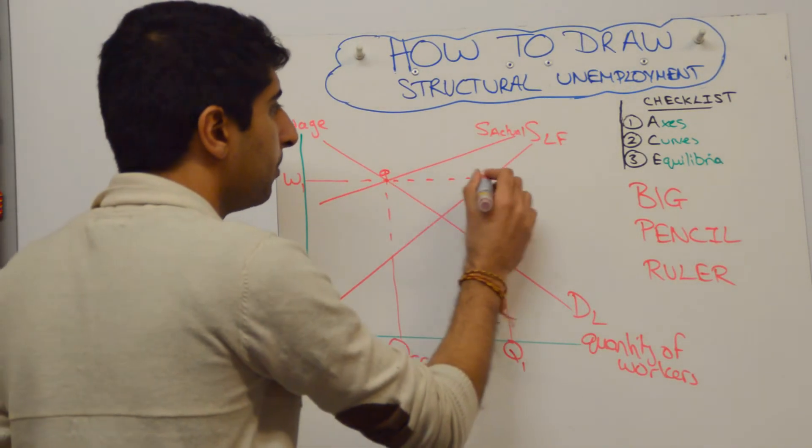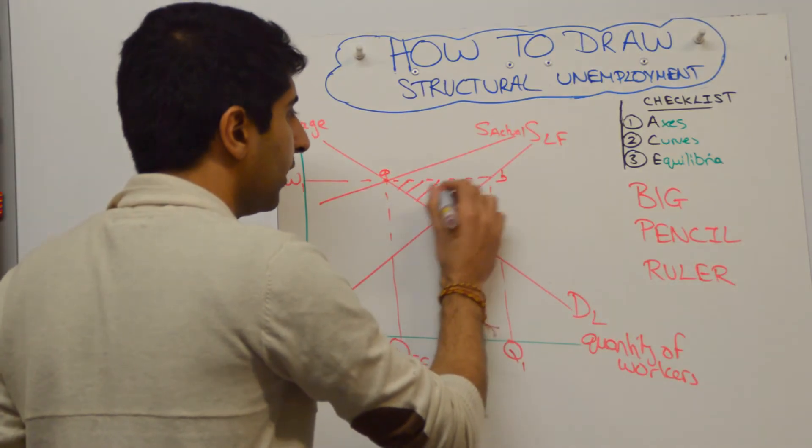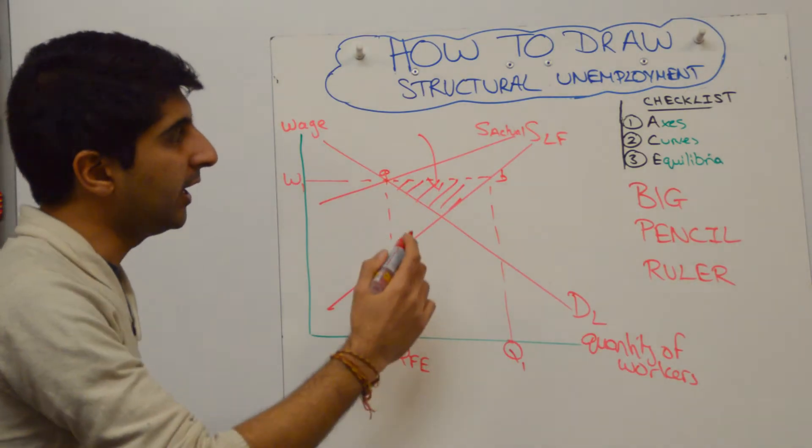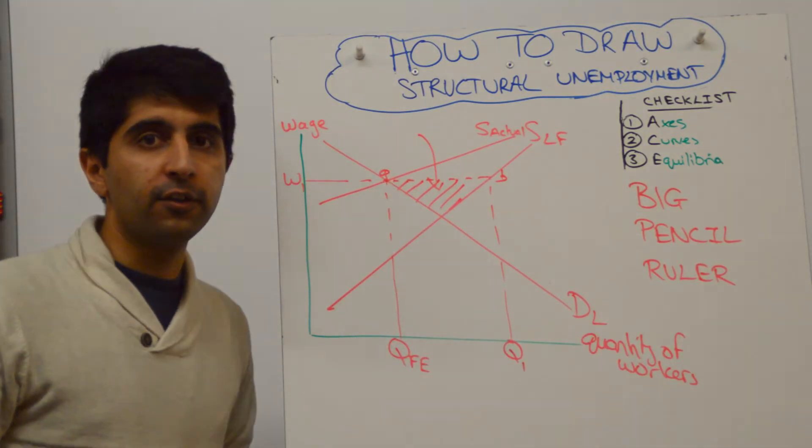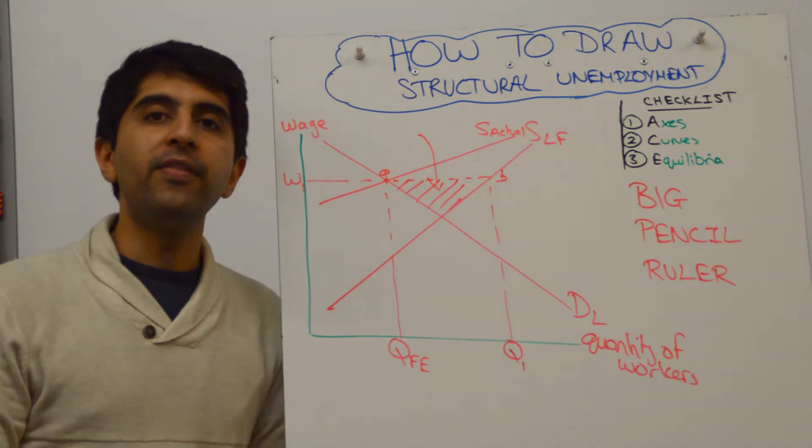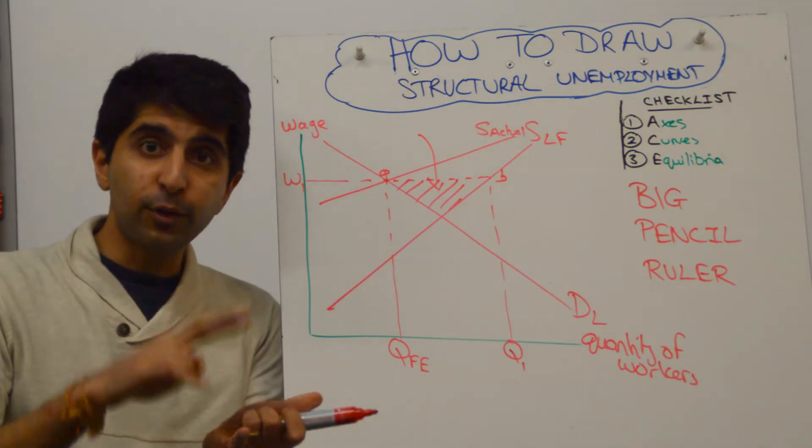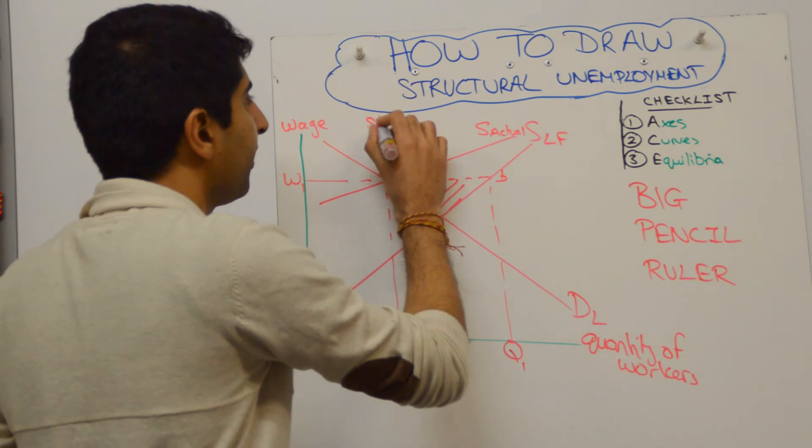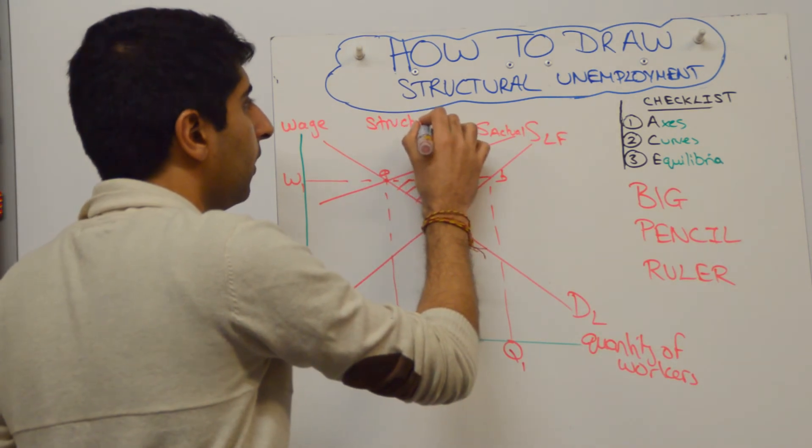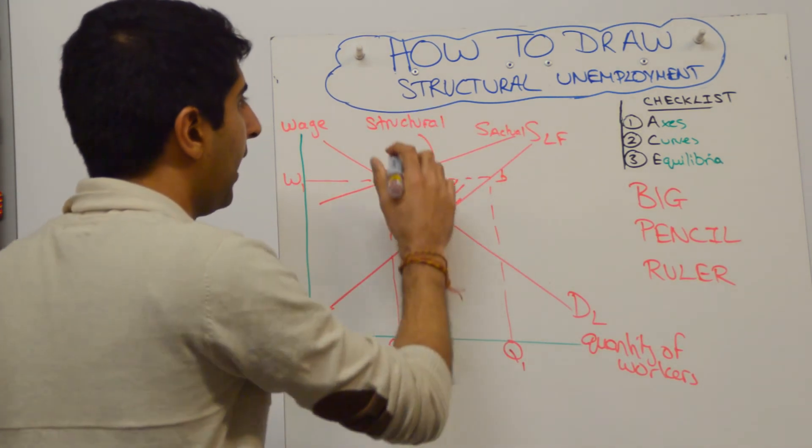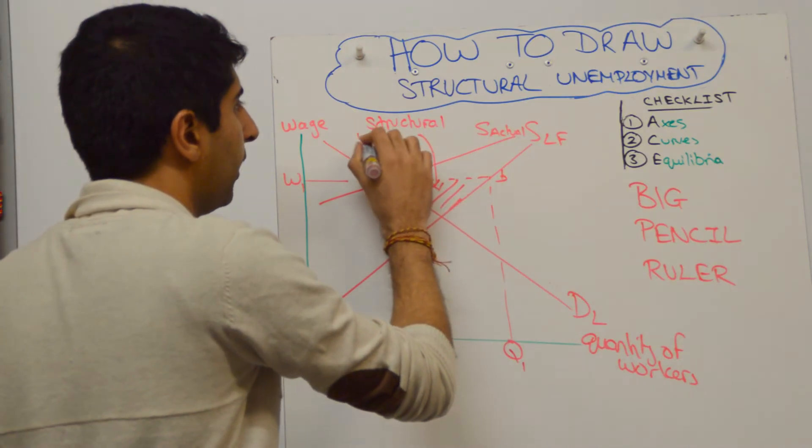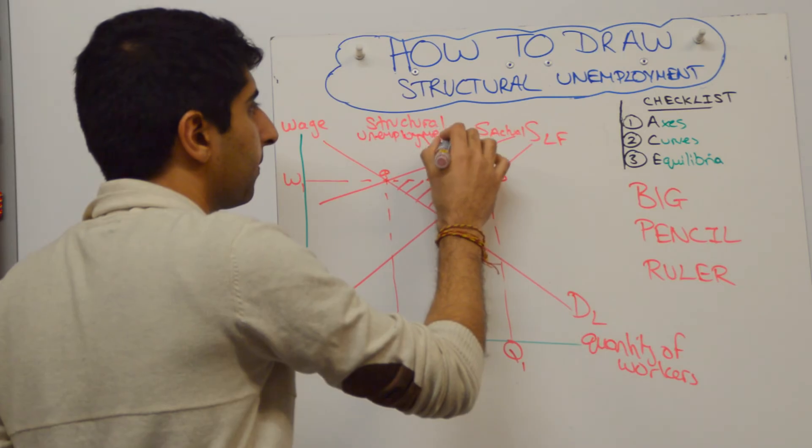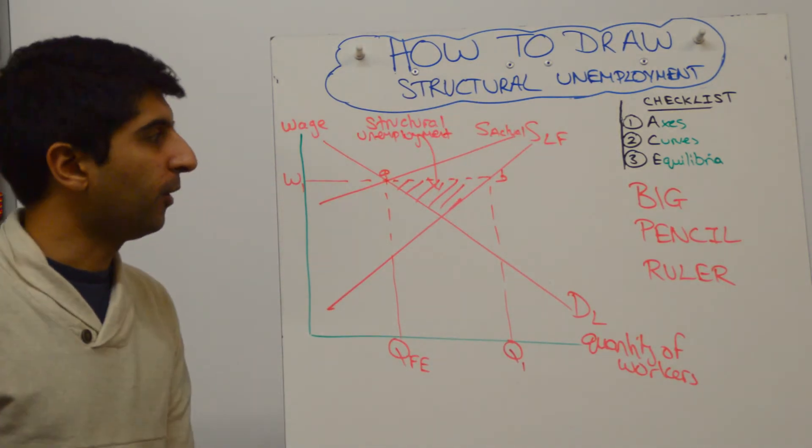So if we label that AB, and maybe you want to shade in a triangle, you can say that those workers, shaded in here, are the workers who are unemployed when there is still full employment, and that includes the structurally unemployed. So you can say here that that little area represents structural unemployment. That's structural unemployment right there.